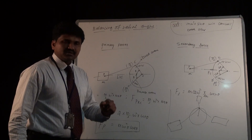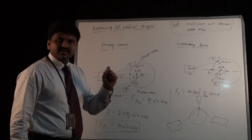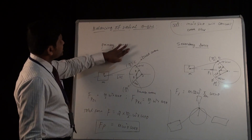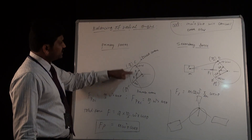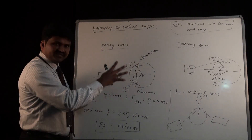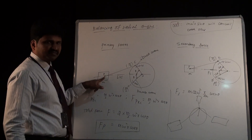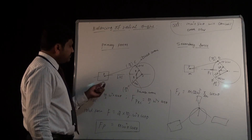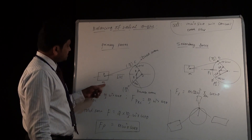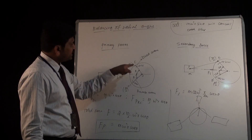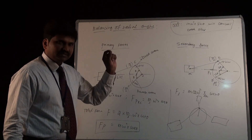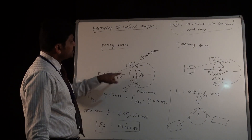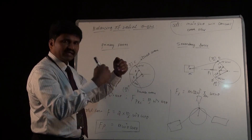So you will have to find only primary unbalanced force and secondary unbalanced force in the case of a radial engine, by the method of direct and reverse cranks. Let us understand what direct and reverse crank methods are for primary forces and secondary forces. Let us consider one cylinder — this is the piston, the connecting rod, and the common crankshaft. Let M be the mass of the reciprocating parts.